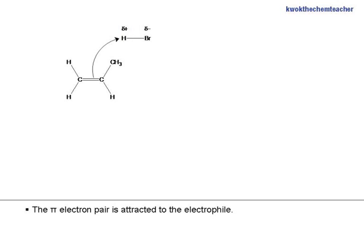The pi-electron pair is attracted to the electrophile. While the HBr bond's electron pair goes to the bromine, breaking the bond.